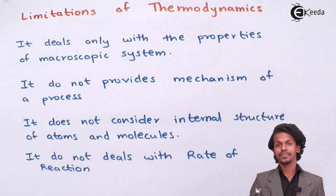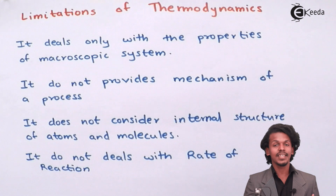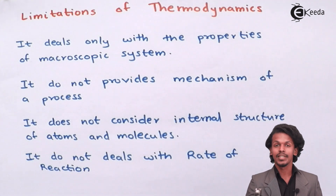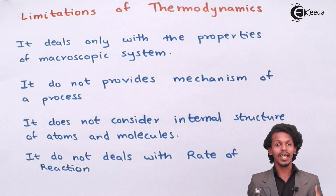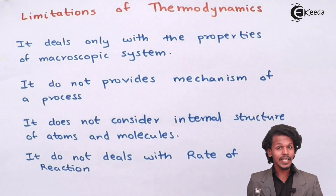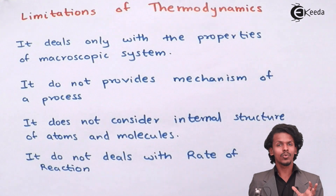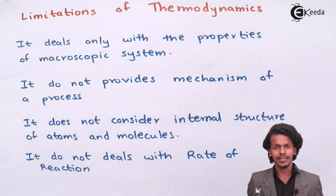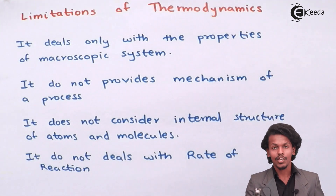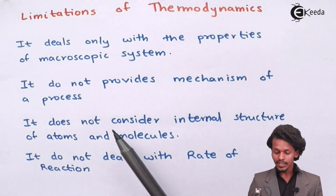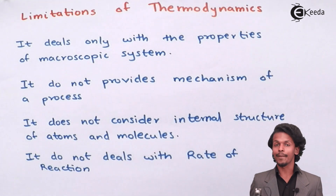The next drawback is that thermodynamics does not provide the mechanism of a process. It only deals with the energy associated with a chemical reaction — it tells us that a reactant is converted into a product, but it doesn't give the mechanism. Understanding the mechanism is necessary to determine conditions that increase the rate of reaction and to get a deeper understanding of the process.